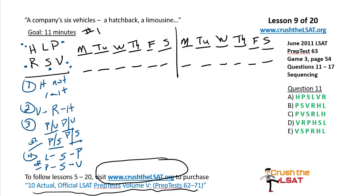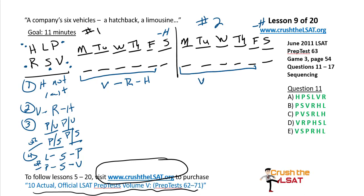Let's combine rules one and two. I'll put a minus sign above Saturday for H in both scenarios — H can't be Saturday. That means we have the V–R–H sequence somewhere between Monday and Friday, true in both scenario one and scenario two. Rules three and four together: P is next to either V or S. None of the rules directly connect to the L–S–P arrangement, so let's look at rule three more carefully.